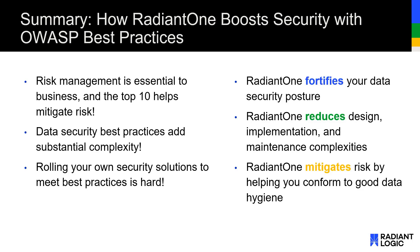So ultimately, what can we take away from the Top 10 and everything we just talked about? Security is hard — there's no two ways about it. The guidance from OWASP helps us mitigate and avoid risk by offering best practices, though these best practices seldom make things simpler. Organizations may be tempted to roll their own security solutions, but doing so is extremely hard and could lead to undiscovered risk down the line. Radiant Logic helps solve this by conforming to best practices more easily, reducing complexities associated with identity and access management.